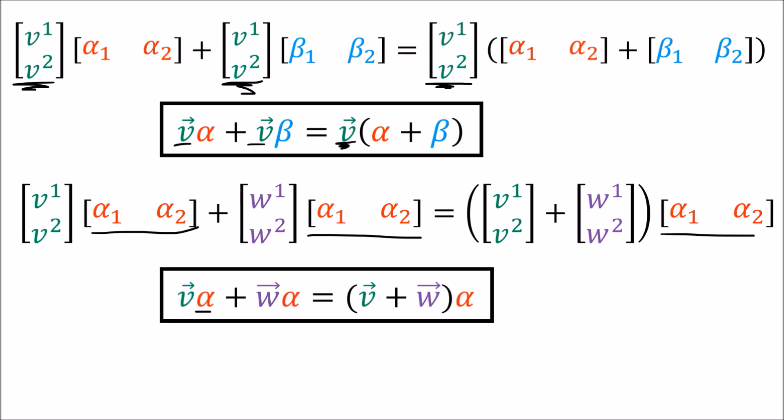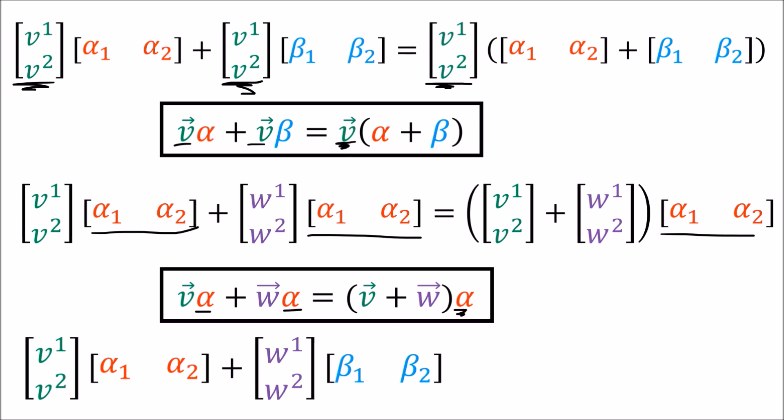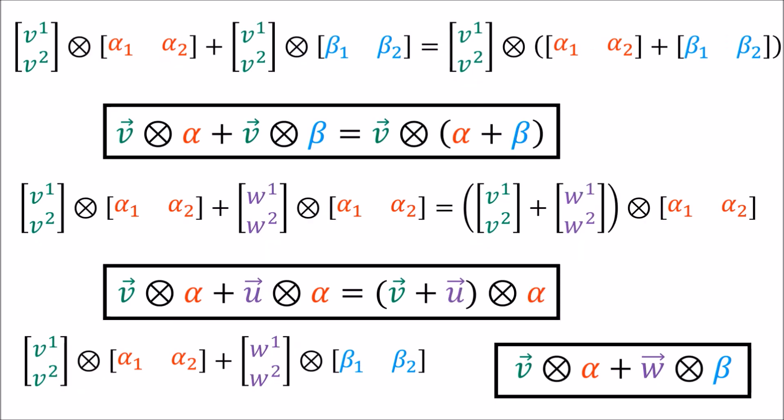The same thing goes with the tensor product — we can factor out the tensor on the right, and both expressions give the same linear map. In the case where two array terms have nothing in common, there's basically no factoring we can do. We could multiply all this out and do the addition to get a single array, but there's no way to factor the expression into something simpler. The same goes for a sum of tensor products — when the two terms have nothing in common we can't simplify it; we just leave it as it is.